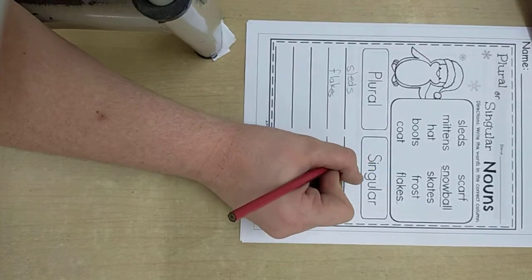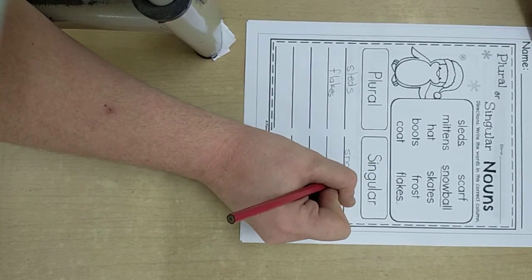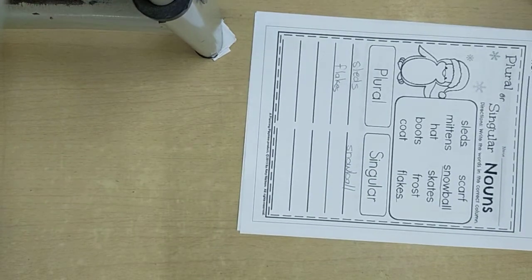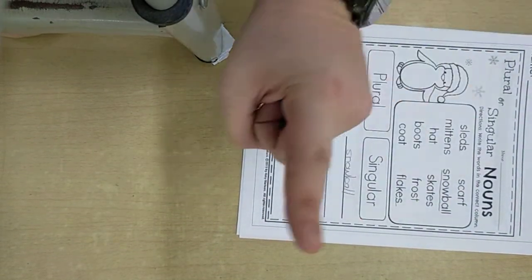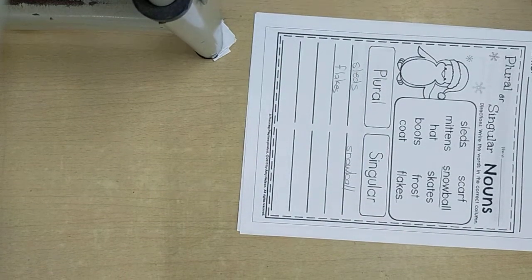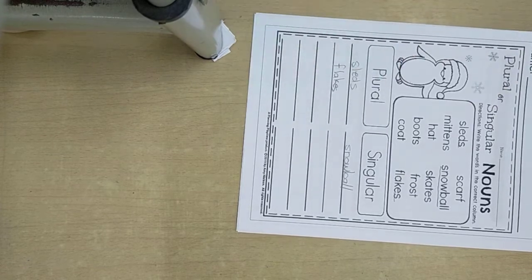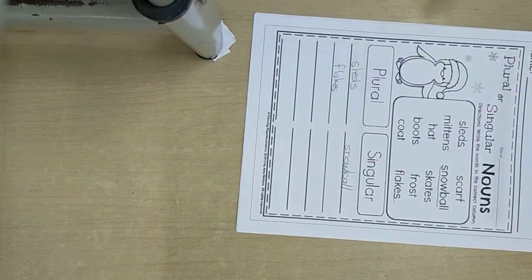Why? Can you tell me why? Because snowball is one. If it was snowballs, it would have been plural. But now there is only one snowball.